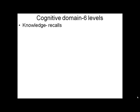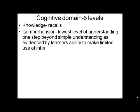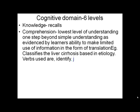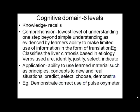The cognitive domain has six levels. First is knowledge — just recalling what was taught in class. Second is comprehension — the lowest level of understanding, one step beyond simple recall, as evidenced by the learner's ability to make limited use of information such as translation. Example: classify liver cirrhosis based on etiology. Verbs used are identify, justify, select, indicate. Third is application — ability to use learned materials such as principles and concepts in a new real situation. Verbs: predict, select, choose, demonstrate. Example: demonstrate the correct use of a pulse oximeter.